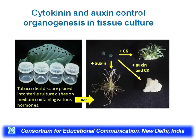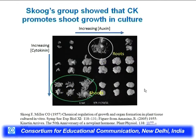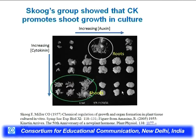However, if a balance of auxin and cytokinin is provided, there will be no root, no shoot — just callus, a mass of de-differentiated cells. This phenotype was discovered by Miller and Skoog's group. Their 1957 paper showed that increasing concentrations of auxin promote roots, increasing concentrations of cytokinin promote shoots, and when both are increased together along the diagonal, there is only callus.